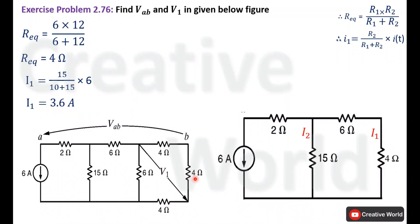Now we need to find the current through the remaining two resistances. We will expand the network back to the previous step. The 4 Ohm resistance was the combination of 6 Ohm and 12 Ohm connected in parallel, so we replace the 4 Ohm resistance with those two parallel resistances.